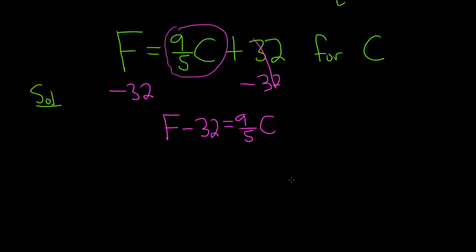Okay, so we're looking for c. It's being multiplied by 9 fifths. To get rid of the 9 fifths, we can multiply by the reciprocal of 9 fifths, which is 5 ninths. So let's do that to both sides.